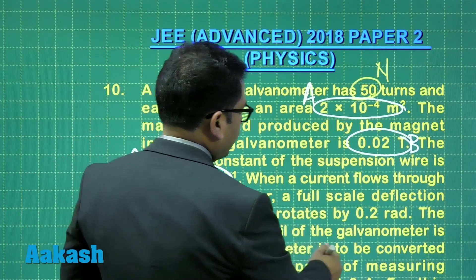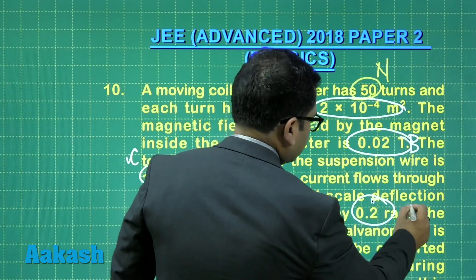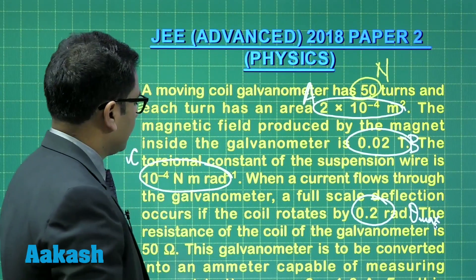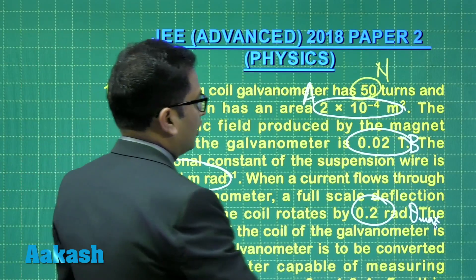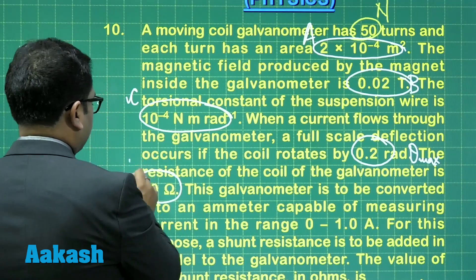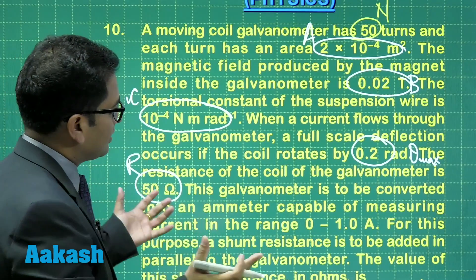If the coil rotates by 0.2 radians, that is the maximum deflection. The resistance of the coil of the galvanometer has also been given, so here this is R. Do not worry, there are so many different terms but that's going to be eliminated very easily.